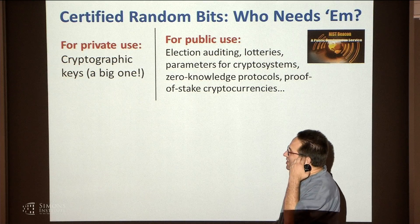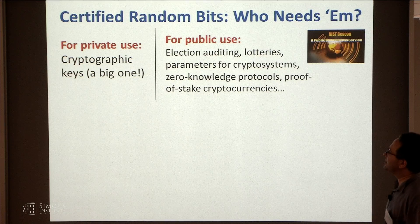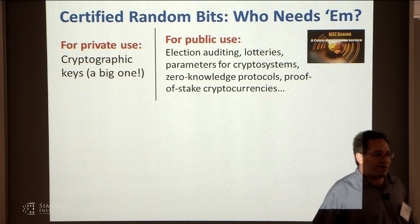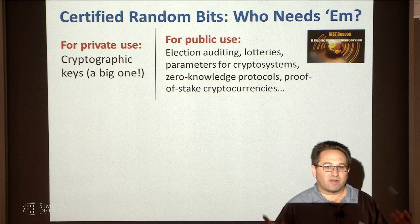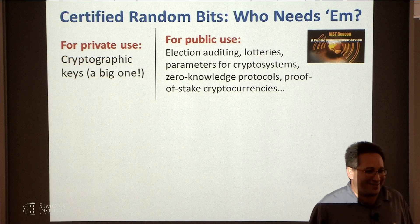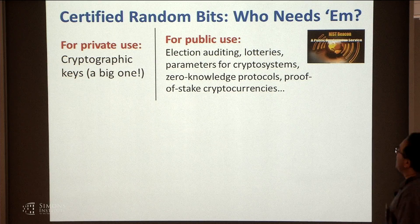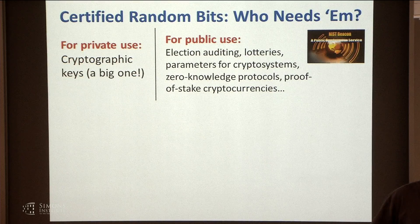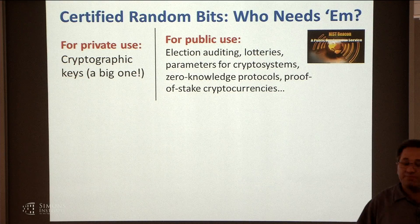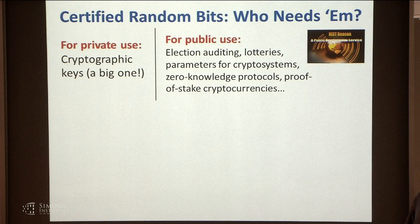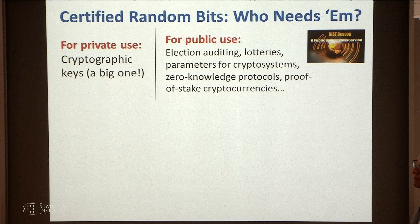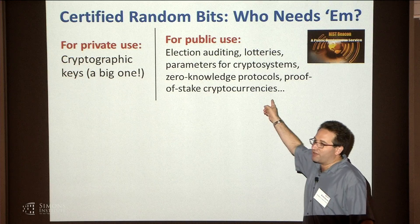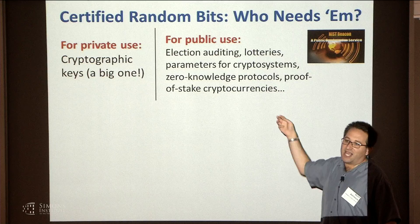To have cryptographically certified randomness — there are two types of uses. If randomness is secret, known only to you or your friend, you can use it for cryptographic private keys, and you'd better have randomness if you're generating cryptographic keys. But there are also many uses for public randomness, announced over the internet and known to everybody: the obvious example is a lottery, deciding which precincts to audit in an election, setting parameters for crypto systems in a way that everyone can believe they were not backdoored, various zero-knowledge protocols, and proof-of-stake cryptocurrencies.